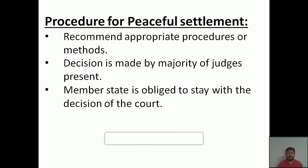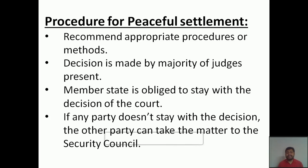Each member state is obliged to abide by the decision of the court. It is the duty of the state to follow the verdict made by the International Court of Justice. If any party does not comply with the decision, the other party can take the matter to the Security Council. For example, if one country is not happy with the ICJ's verdict, they can approach the Security Council for better justice.